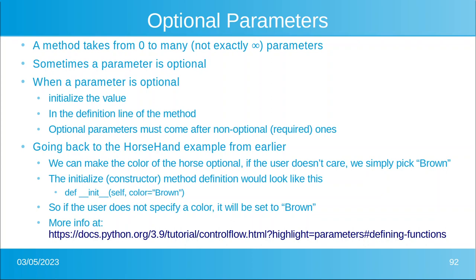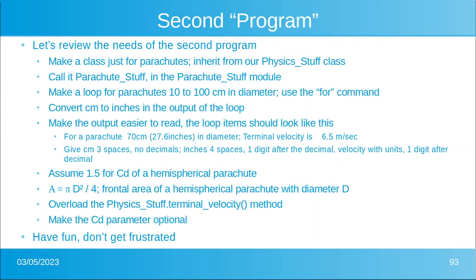Let's start with our second program. Let's review the needs of the second program. We're going to make a class just for parachutes. We're going to inherit from Physics_Stuff. We're going to call it Parachute_Stuff in a new module called parachute_stuff. We're going to make a loop that's going to go from 10 to 100 centimeters in diameter. We're going to convert centimeters to inches in the output.